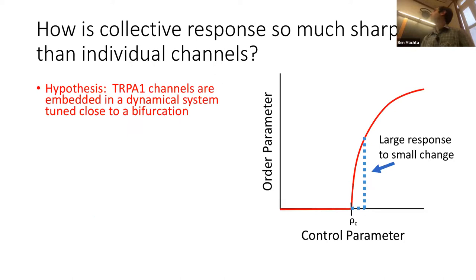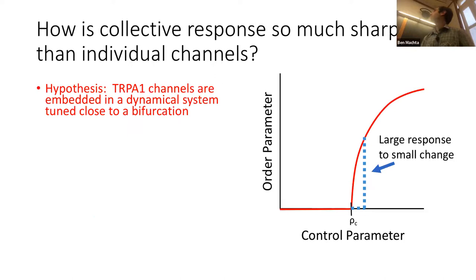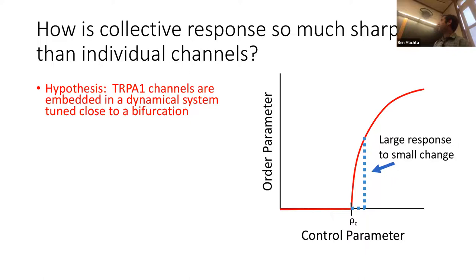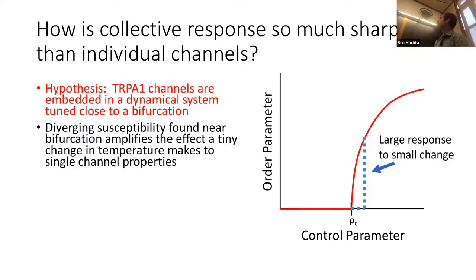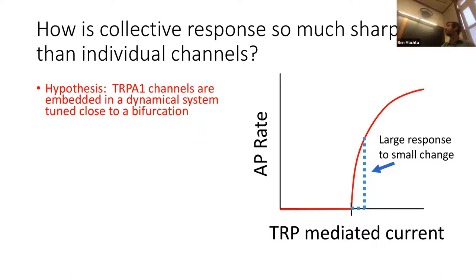The broad hypothesis is that the TRP channels are embedded in a dynamical system tuned very close to a bifurcation. Schematically, there's a control parameter on one axis and an order parameter on the other, and close to the bifurcation there's a very steep relationship between the two — a diverging susceptibility. The TRP-mediated current is on the x-axis and the action potential rate is on the y-axis.